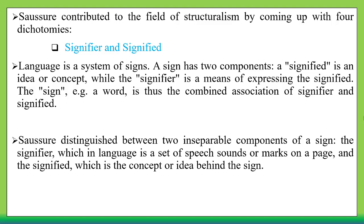In Structuralism, Saussure is considered the father of linguistics — a very famous and well-known linguist in this school of thought. He contributed to the field of Structuralism by coming up with four dichotomies.